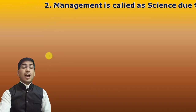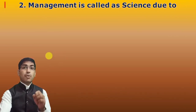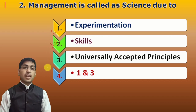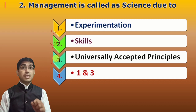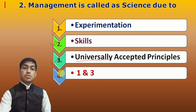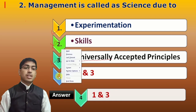Second question: Management is called as both art and science. We have seen why it is art, but why science? Science, because of experimentation, observation, and creativity. Skill is called art, so that option is not accepted. The principles are universally accepted ones. So the answer is the fourth option — all of the first and third points.